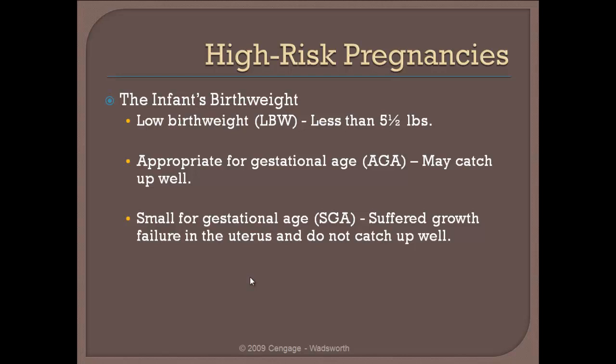Some acronyms you need to know: LBW, AGA, and SGA. LBW stands for low birth weight — any child born at less than 5 pounds 8 ounces is considered low birth weight. AGA stands for appropriate for gestational age. Sometimes we see women giving birth early. A baby being premature is not necessarily always going to cause consequences if the baby is an appropriate size for its gestational age and is not significantly premature — these babies catch up fairly well and oftentimes don't have any developmental issues. But what is much more common is that premature babies are small for their gestational age, and these babies do suffer consequences and oftentimes do not catch up well.